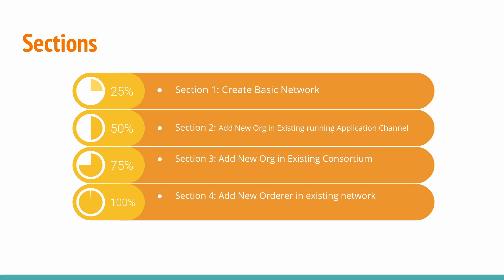In Section 2 we will add a new organization in the existing network in the application channel. When we create a basic network, we will create a simple channel between the organizations — that is the application channel — and at runtime if we want to add a new organization into that application channel, that part we will cover in Section 2. Once this new organization gets added into the application channel, it can interact with the other organizations using this channel.